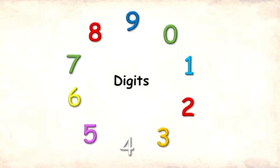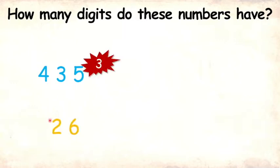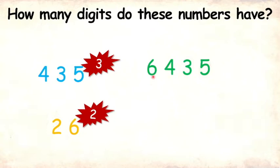Every number in our base 10 number system can be written using a combination of these digits. Let's identify how many digits a few numbers have. The blue number has 1, 2, 3 digits. The yellow number has 1, 2 digits. The green number is made up of 1, 2, 3, 4 digits. And the pink one has only one digit.